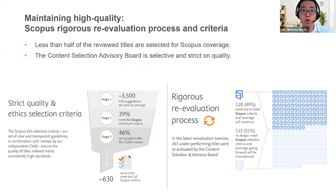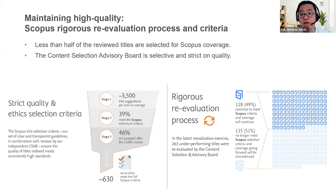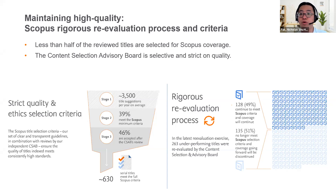One of the key things we do on Scopus is a rigorous re-evaluation process. Not all journals submitted to Scopus are indexed — it's very strict. Every single year we have about 3,500 suggestions on average. Only 40% meet the minimum criteria, and only 46% of those are accepted after the review period, meaning about 630 titles meet the full Scopus criteria — approximately one sixth of all submissions. And being indexed on Scopus doesn't mean you're there forever. Approximately 263 titles will be re-evaluated each year, and half of them will be discontinued while the other half stays on.